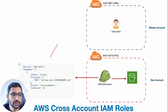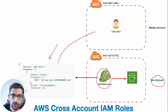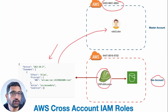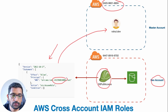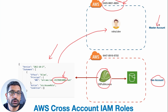On the left-hand side you can see a trust policy, which is really important for the IAM role present in the dev account. Using this trust policy, the user rahul.dev in the master account should be able to assume that role. The trust policy has the master account number associated with it, ensuring that only users from that master account — and no other AWS account — can assume this role.